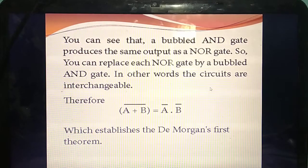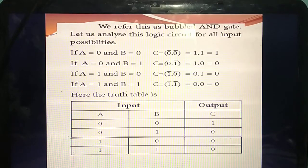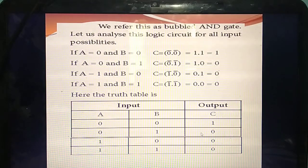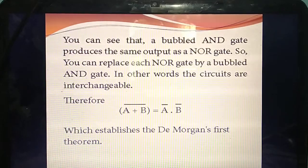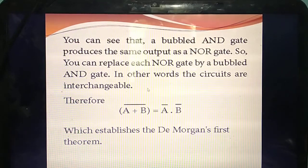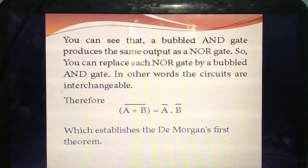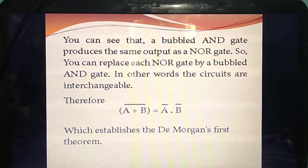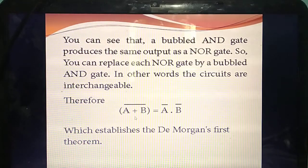If you look at the output of the truth table, both NOR gate and this bubbled AND gate have the same outputs — same truth table. You will get the same output. Therefore, we can simply replace that NOR gate with the bubbled AND gate, no problem. NAND gate can be replaced with the bubbled AND gate because both NOR gate and bubbled AND gate give the same output.